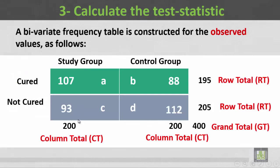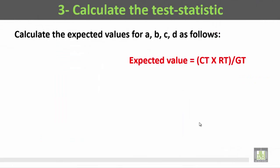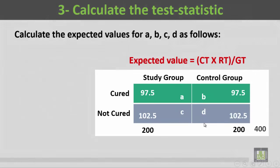The column totals are 200 and 200, the first row total is 195, the second row total is 205, and the grand total — a plus b plus c plus d — is 400. The expected value is calculated as the column total multiplied by the row total divided by the grand total.